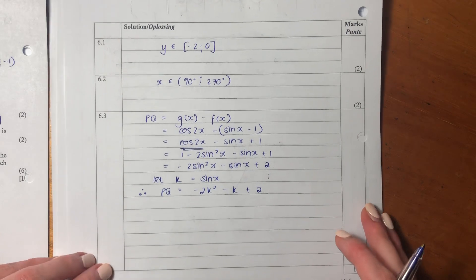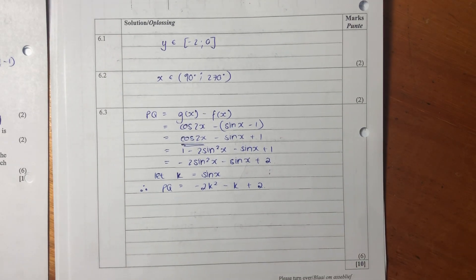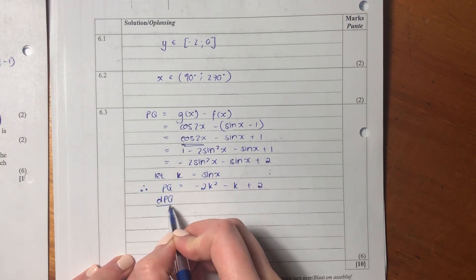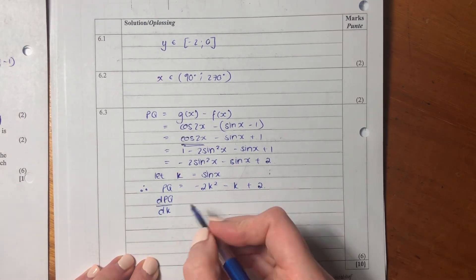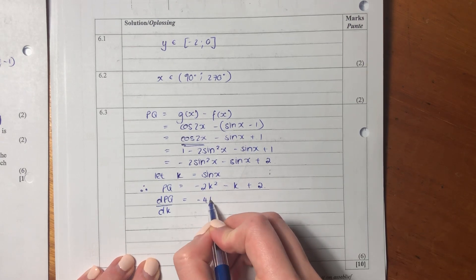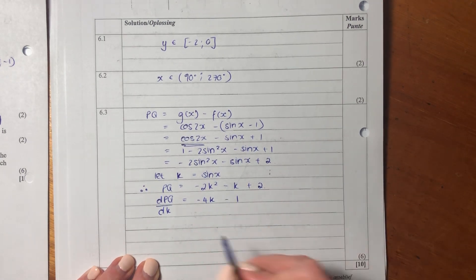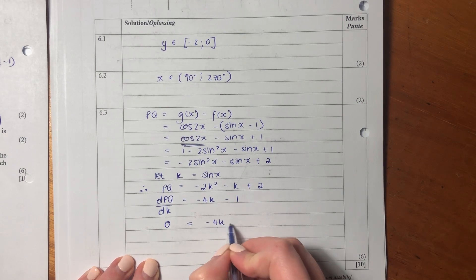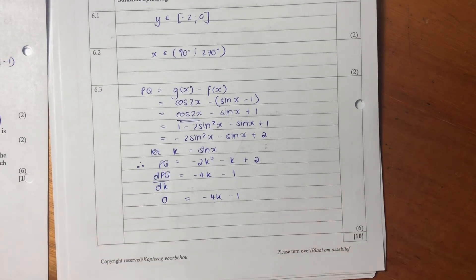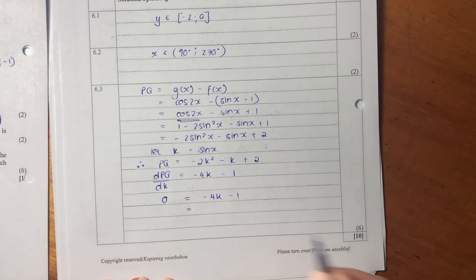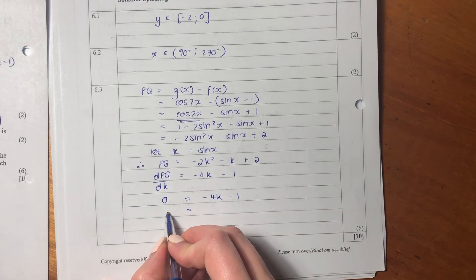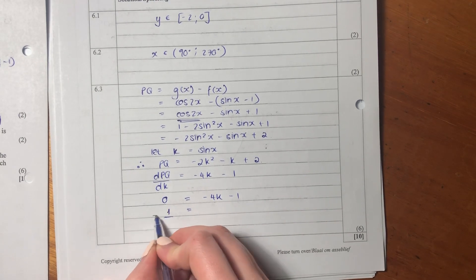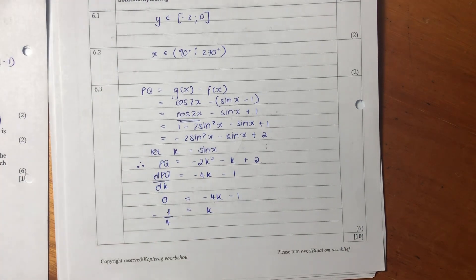Now you could be thinking, oh, that's easy peasy. It is. Because now all we have to do is we get our derivative and then we can just solve quickly. So I'm going to get the derivative of pq with regard to k. This is going to become negative 4k minus 1. Set that equal to 0, because when we're getting a maximum or minimum, we're equal to 0. So then this is going to become k equals negative 1 over 4.